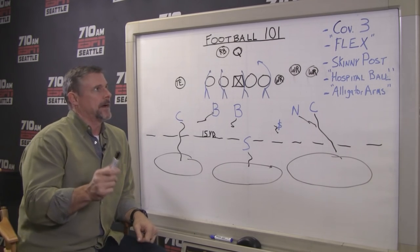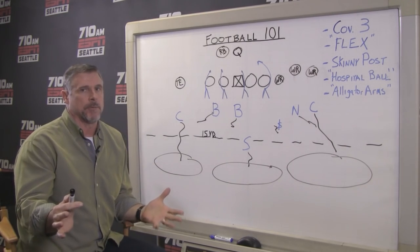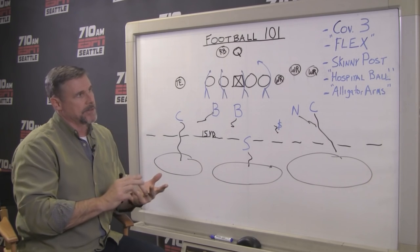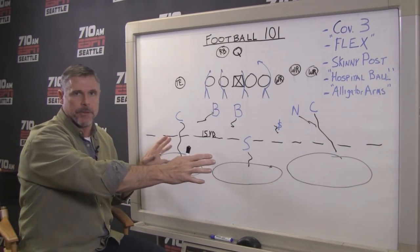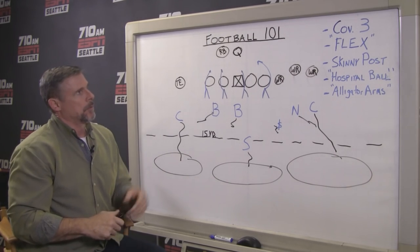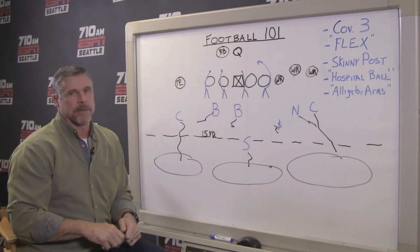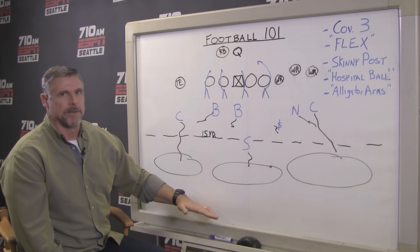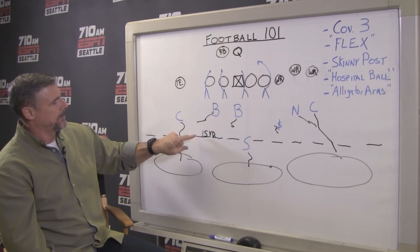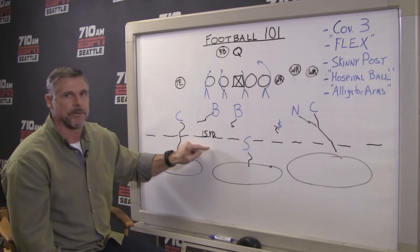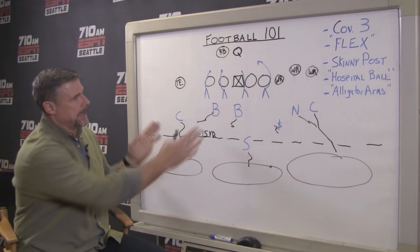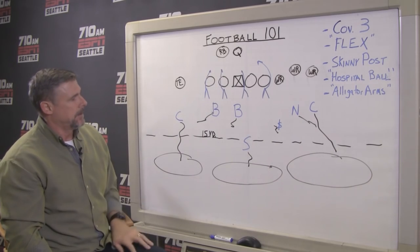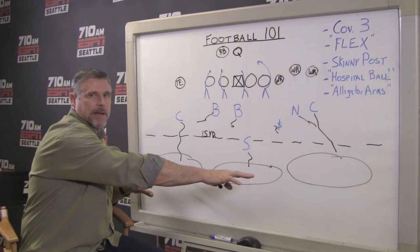First I want to talk about what the Seahawks really like running, which is cover three — a zone drop. In pass coverage there's man-to-man and there's zone, and sometimes a mixture of the two. Cover three means the deep part of the field — about 15 yards beyond the line of scrimmage to the goal line — is divided among three defensive backs. With four rushers and three dropping deep, that's seven guys, leaving four guys to drop underneath.